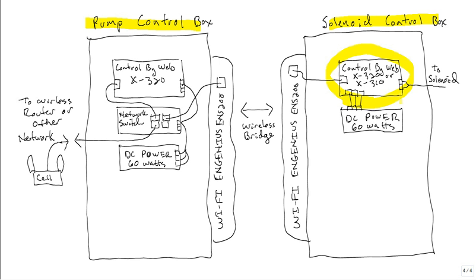So the solenoid control box, this is the control by web device. It's a control by web 320 or 310 that controls the solenoid. And then here's this wireless bridge I talked about. Wireless bridges are secure bridges that this wireless device talks to this one and nobody else can talk to it.